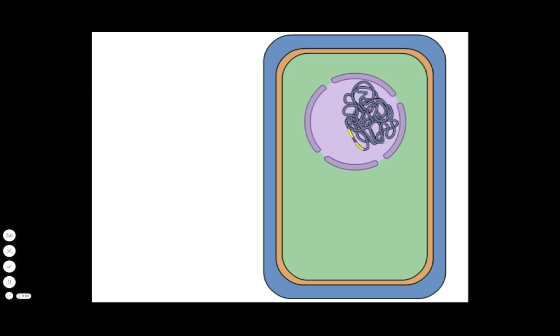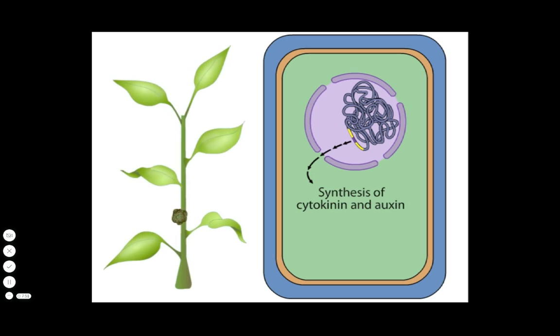A number of genes are encoded in the tDNA and become expressed in the plant cell. Some of the gene products are responsible for the synthesis of the plant hormones cytokinin and auxin, which trigger the plant cells to divide rapidly and form an undifferentiated mass known as a crown gall tumor.